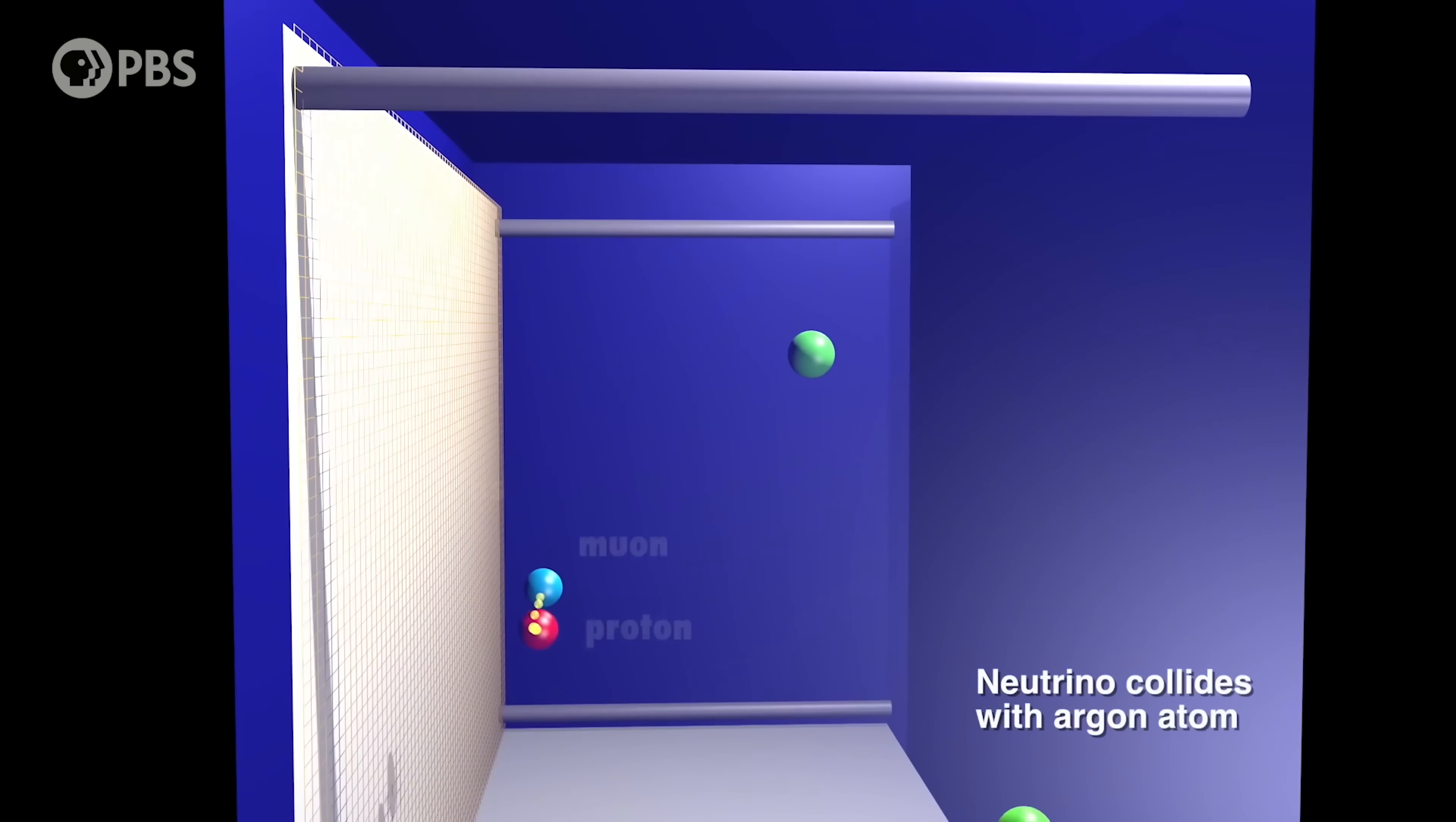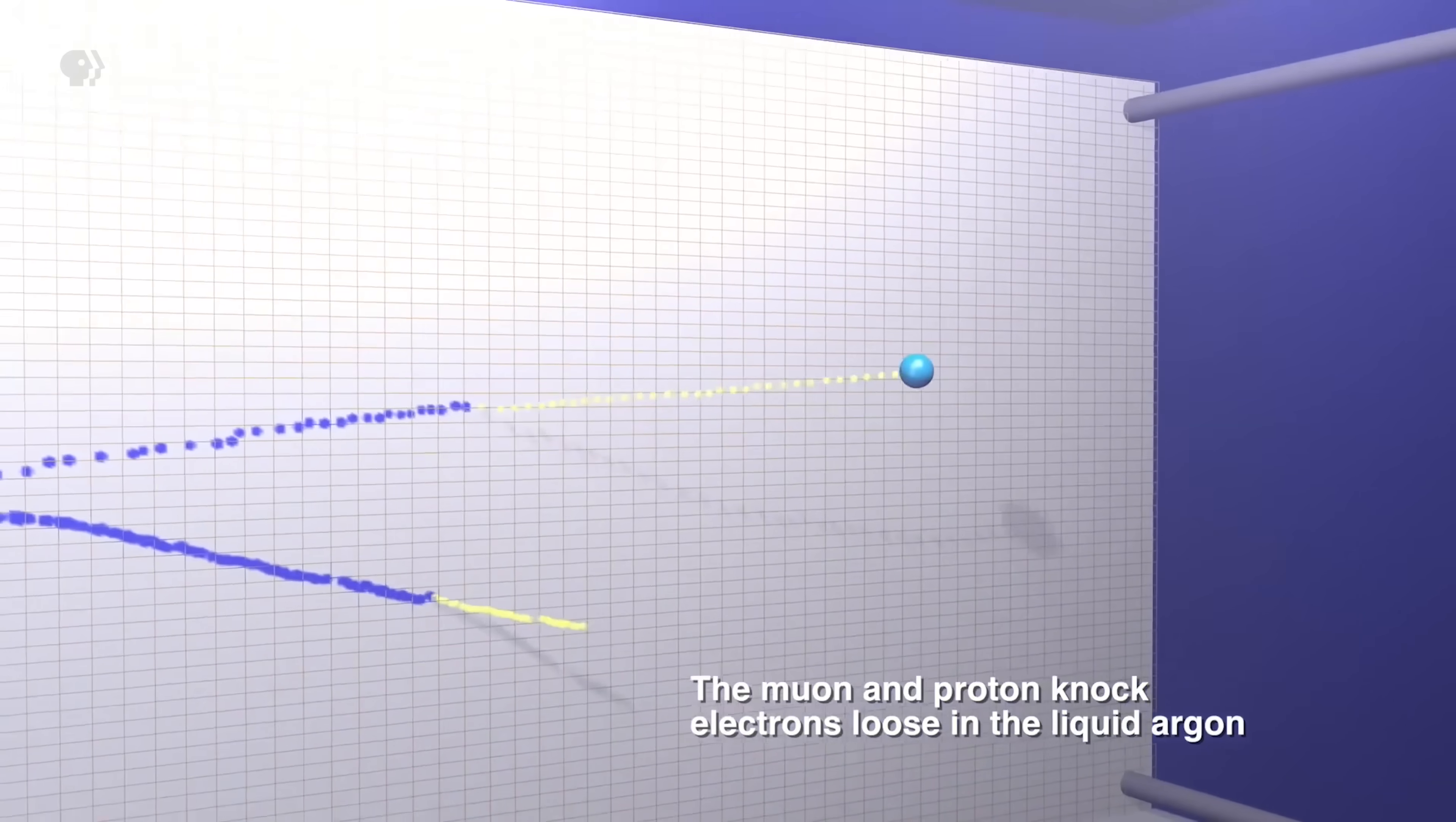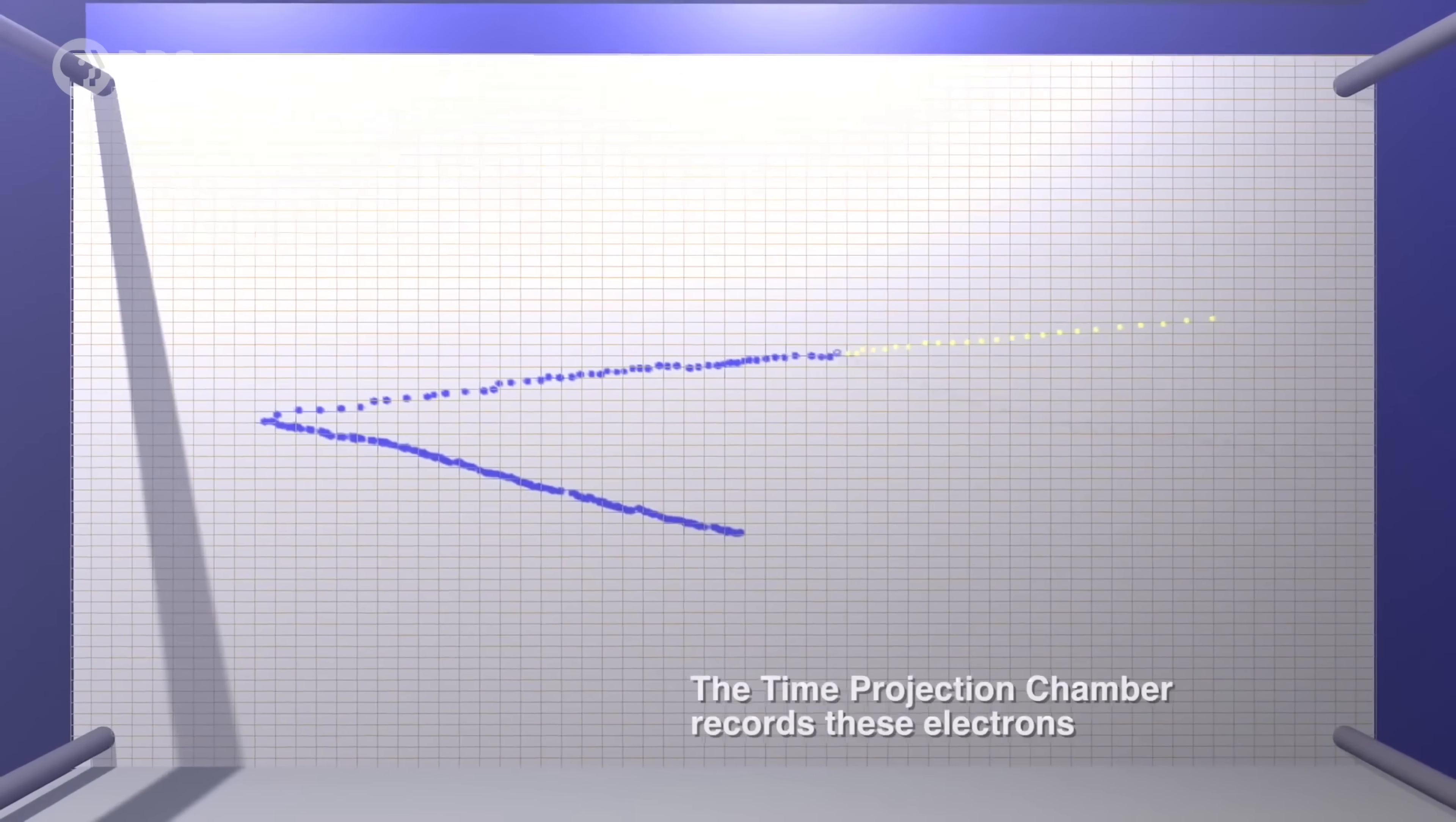We charge the sides of the detector so a giant electric field fills the entire tank. That draws these free electrons to the walls of the tank, which lets us trace out the path of the particles.